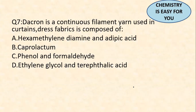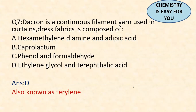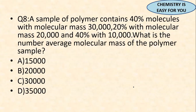Question 7: Dacron is a continuous filament yarn used in curtains, dress fabrics, etc. We need to find the monomers of Dacron. The answer is option D — ethylene glycol and terephthalic acid. Dacron is composed of these two monomers. Also, Dacron is known as Terylene because it is formed from terephthalic acid and ethylene glycol.